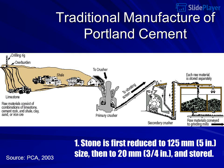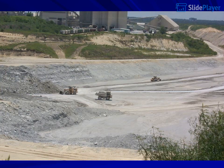Traditional manufacture of Portland cement — Step 1: Stone is first reduced to 125 millimeters (5 inches) in size, then to 20 millimeters (3/4 of an inch) and stored. Source: PCA 2003, Figure 2-3, steps in the traditional manufacture of Portland cement.